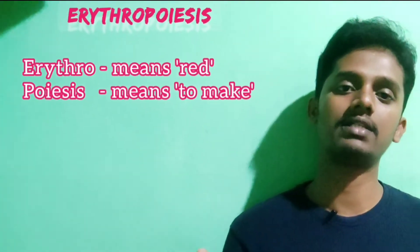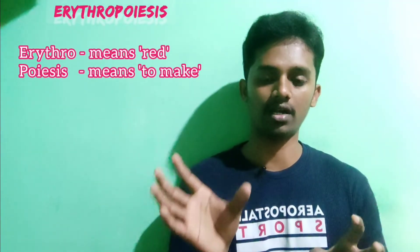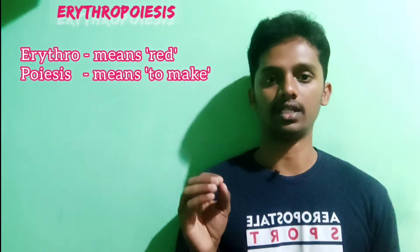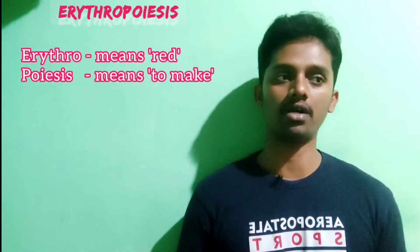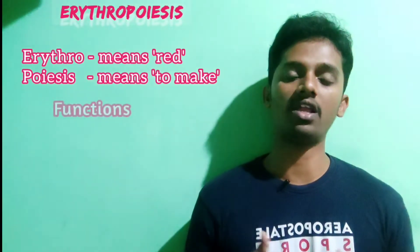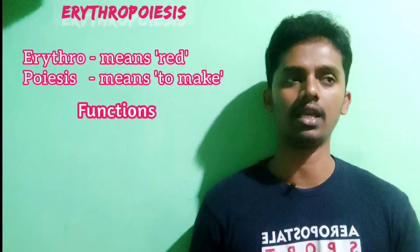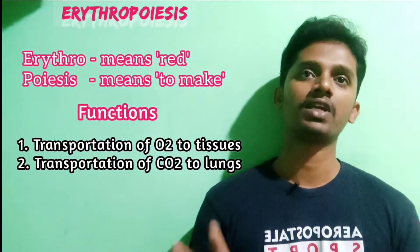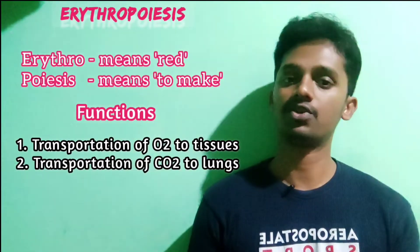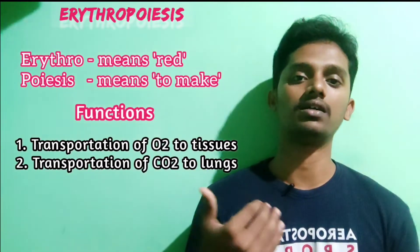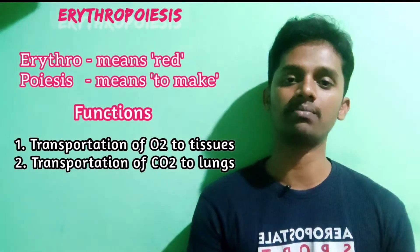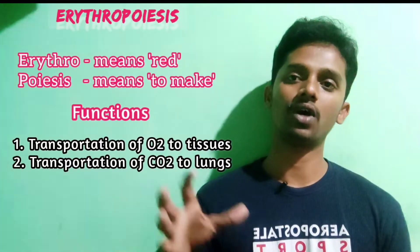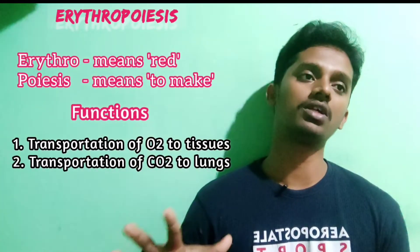That is why the process is called erythropoiesis — the making of red blood cells. Red blood cells, also known as RBC, perform transportation of oxygen to tissues and cells, while also assisting in eliminating carbon dioxide from tissues. Each and every cell in our body requires oxygen.